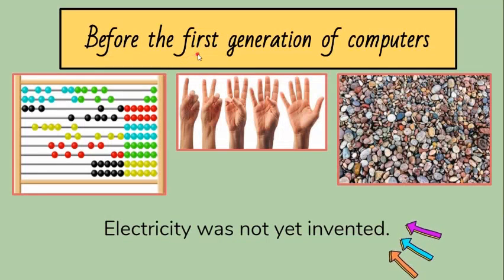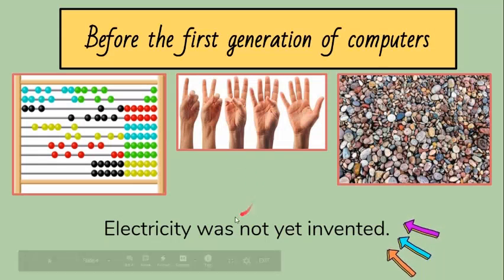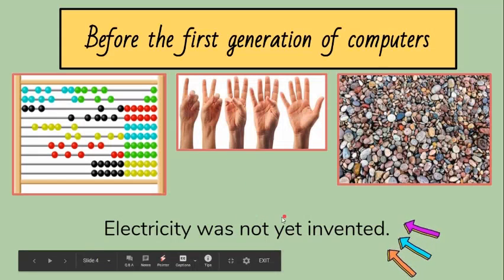Before the first generation of computers, man used his fingers, ropes, beads, bones, pebbles, and other objects for counting. During this time, electricity was not yet invented.